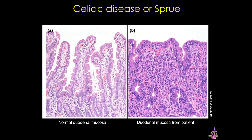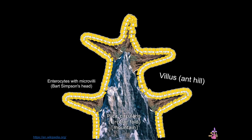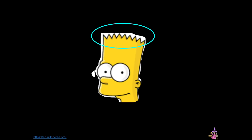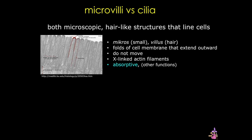You might take a minute to predict some of the symptoms of celiac disease. The last specializations we'll talk about are the microvilli — the apical specializations on the enterocytes, the simple columnar cells of the villi. I think about these cells as Bart Simpson's head, and the microvilli as Bart Simpson's hair. These are hair-like structures that line the apical surfaces of cells. They're made of actin filaments, and they're essentially folds of the membrane.